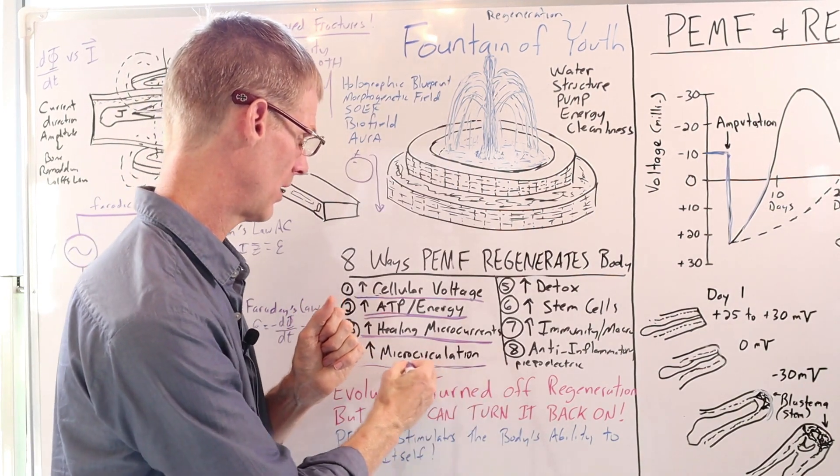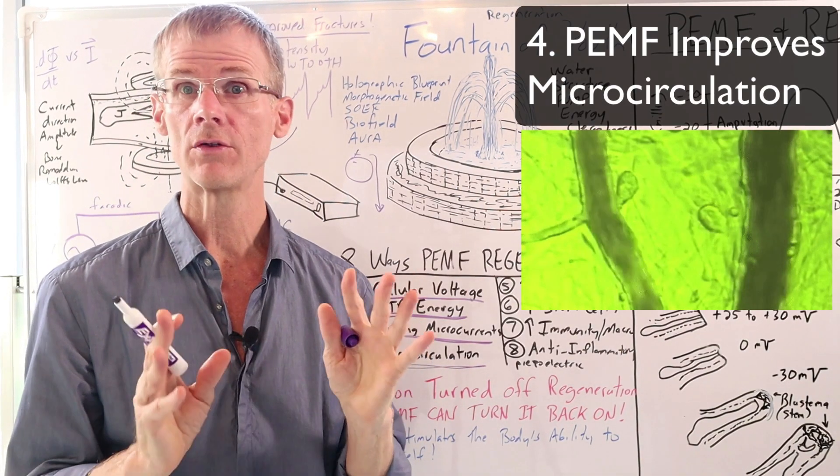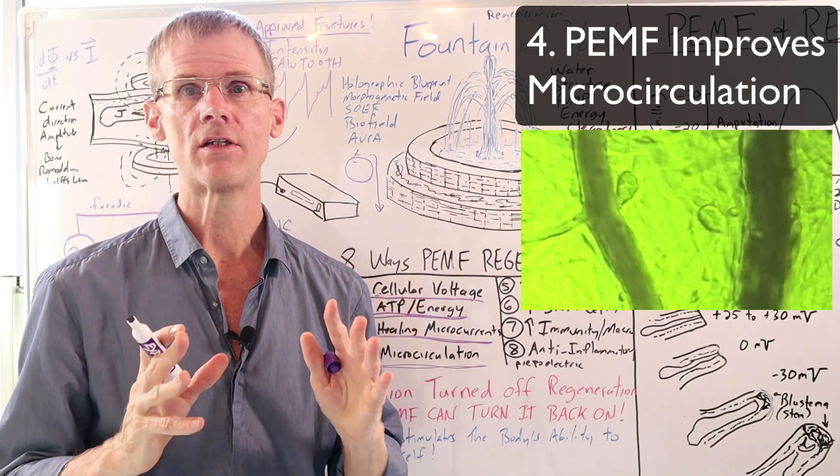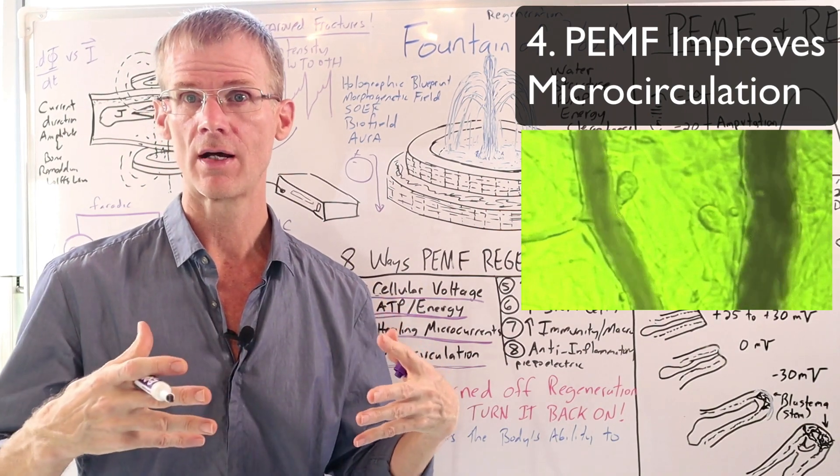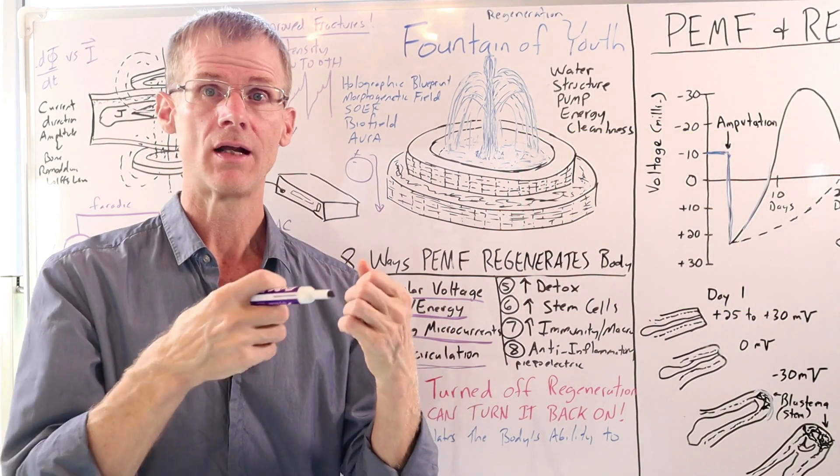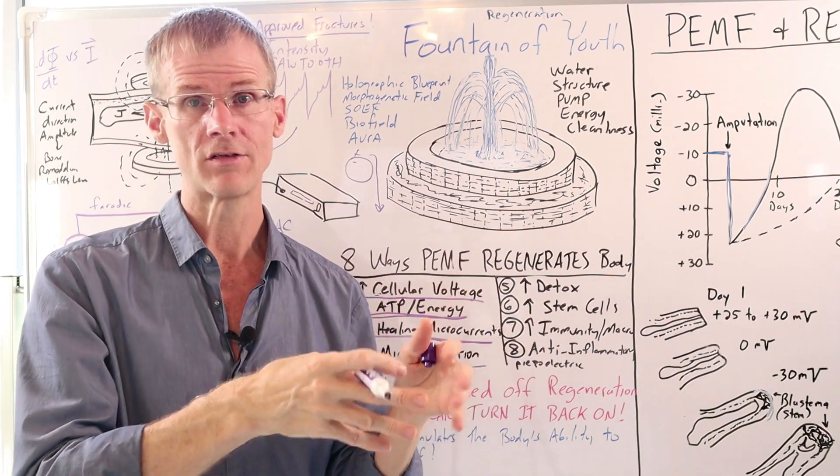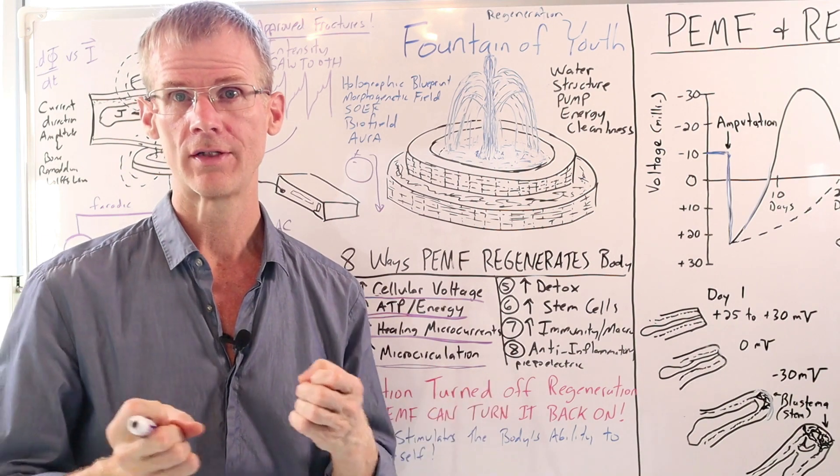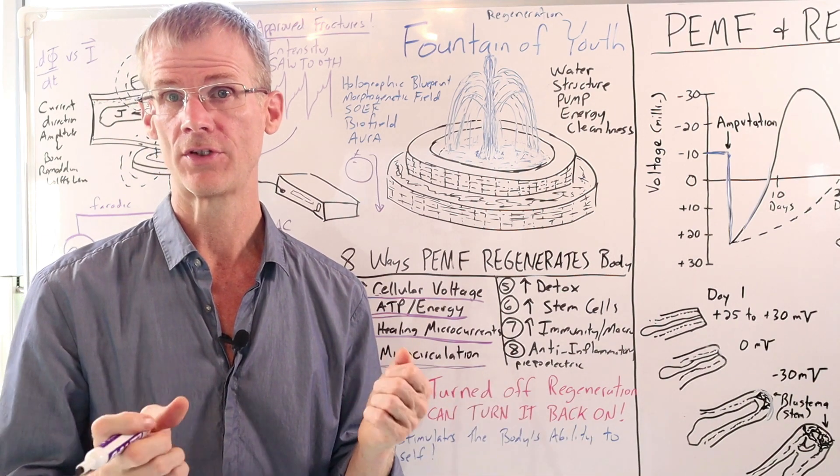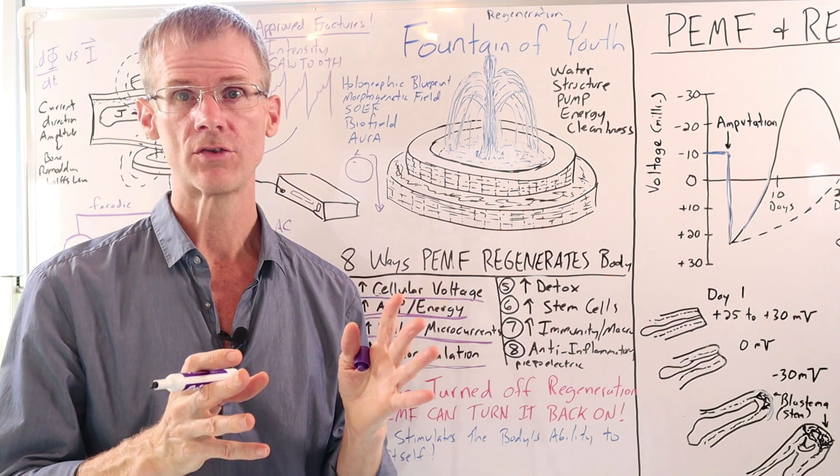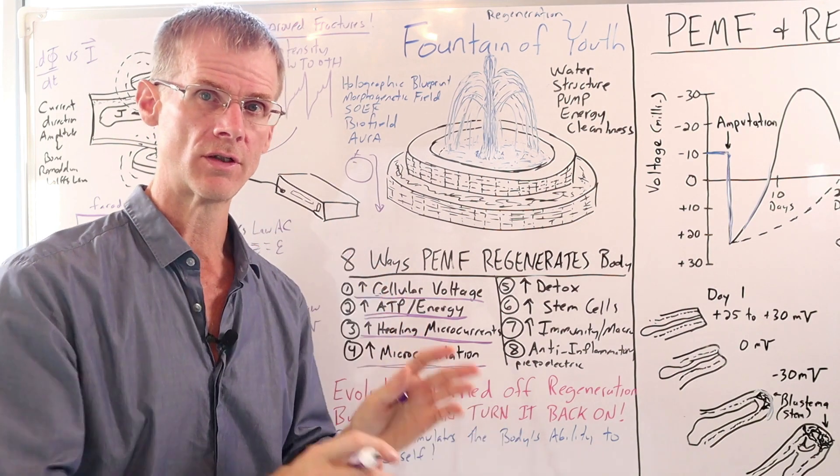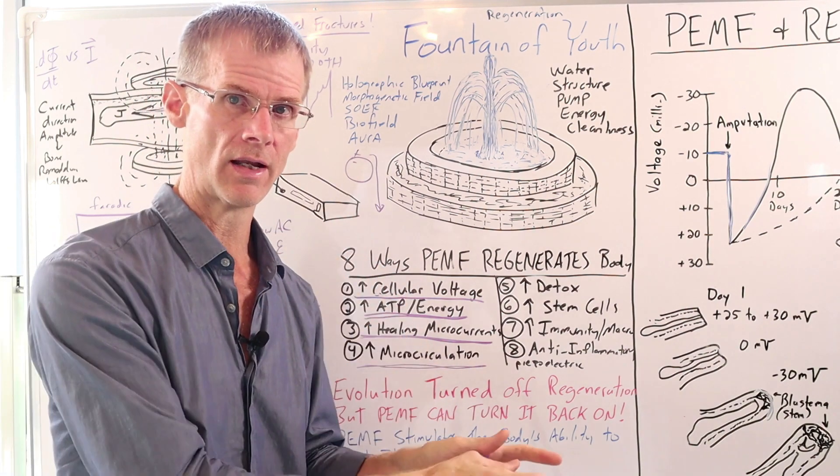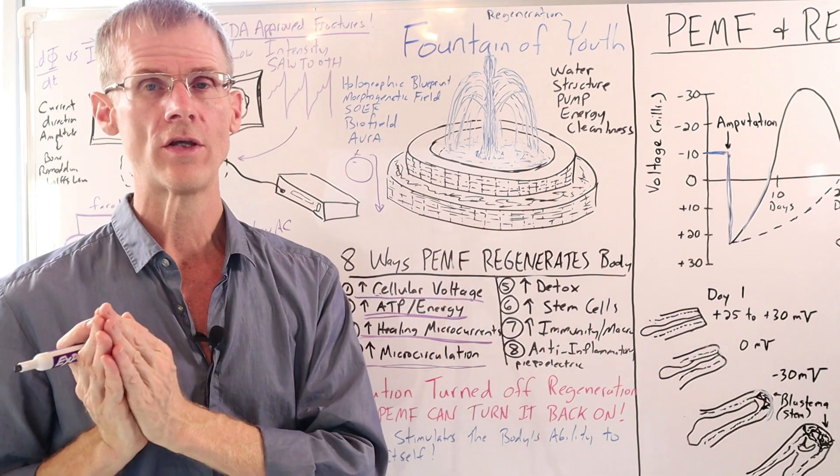The next thing that PEMF therapy helps with as far as regeneration is microcirculation. And again, many studies showing that PEMF increases nitric oxide to widen the blood vessels. It helps to dissipate the Rouleau effect so that the blood flows more easily. And it even lowers the surface tension of the blood so that it's like wetter. The blood is not as sticky and like maple syrup. So all these properties of microcirculation are going to allow oxygen and nutrients to get into that area and then deliver all the waste products out.